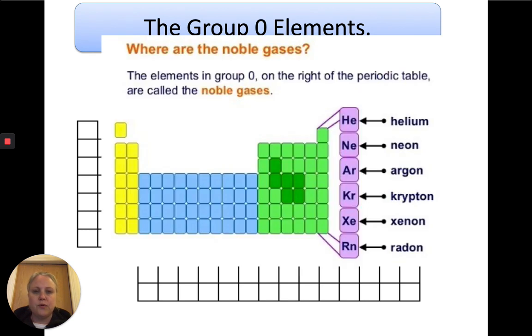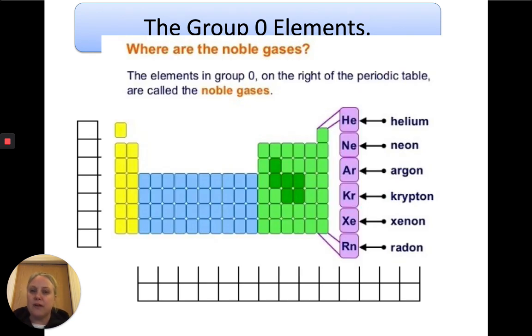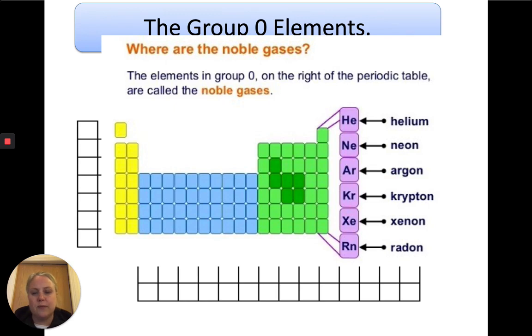So the noble gases are helium, neon, argon, krypton, xenon, and radon. Those are all the noble gases — all the group zero elements. These are the elements we're going to be talking about today.